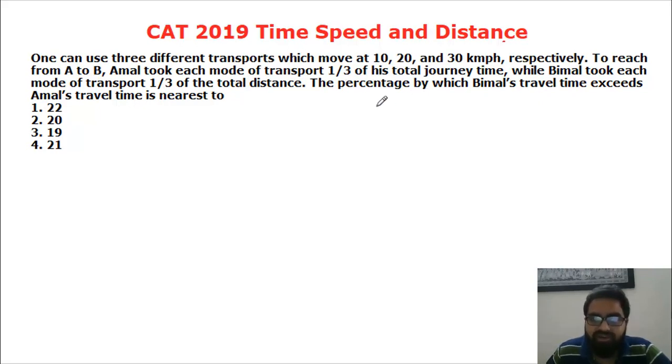So you are travelling distances of 10, 20 and 30 for one hour each, you will cover 60 kilometers in three hours. So your average speed will be 20. So that is pretty easy, the first part.